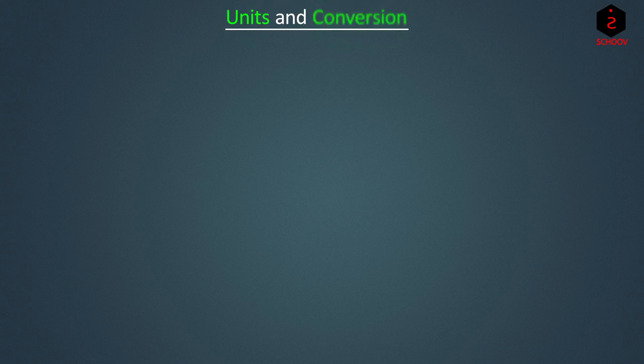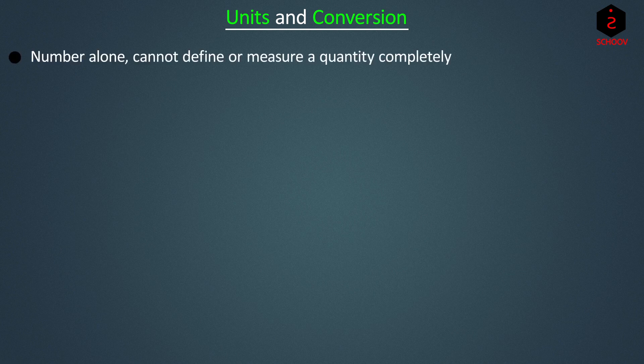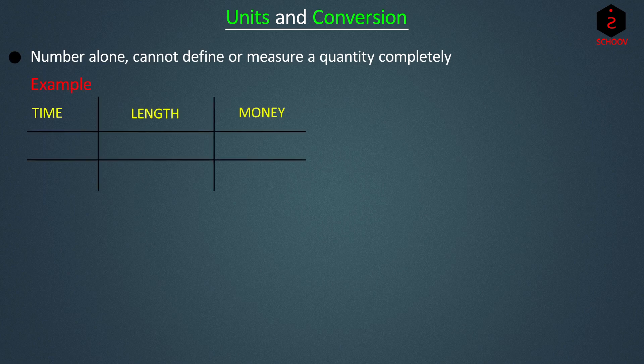In the first video, we learned that a number is something that we need to count, but a number alone cannot define or measure a quantity completely. For example, let's take time, length and money.